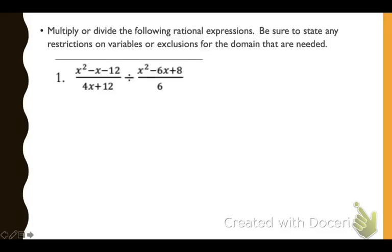Algebra 2, Unit 8, Rationals Study Guide, numbers 1 through 8. We're going to multiply or divide the rational expressions, and then state any restrictions on variables or exclusions for the domain that are needed.